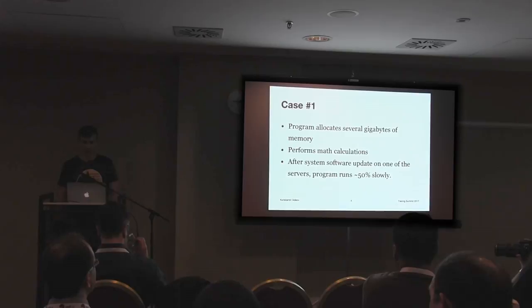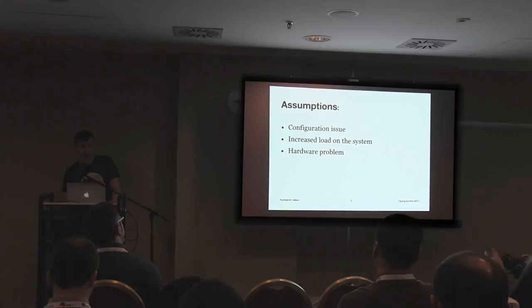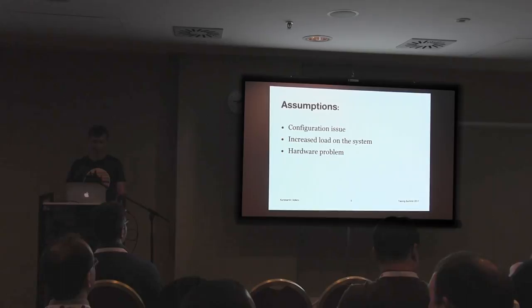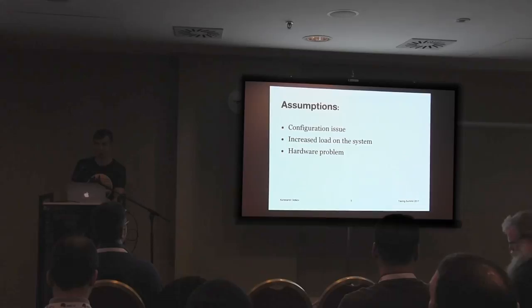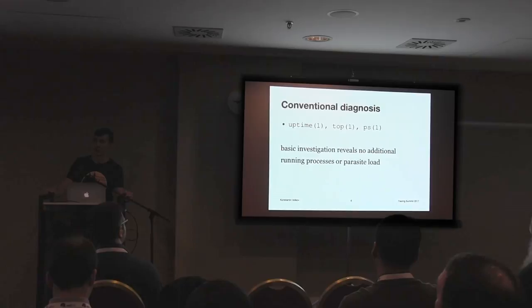I have a program that allocates several gigabytes of memory, performs some math calculations using data stored in this memory, and after system and software updates on one of the servers, the program runs 50% slower. My first assumptions were that the update broke the setup, or that the load on the system somehow increased, or maybe some hardware problems. I started my investigation with conventional tools like atop and found that the setup is okay in terms of application, no additional load, no additional processes.